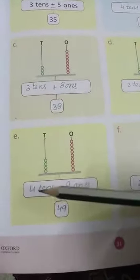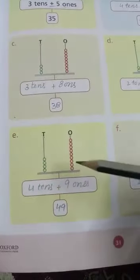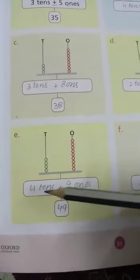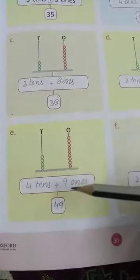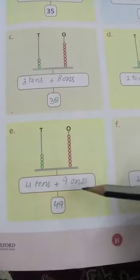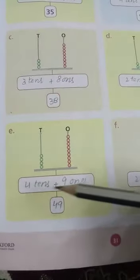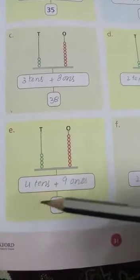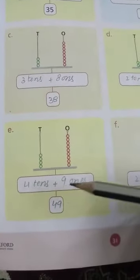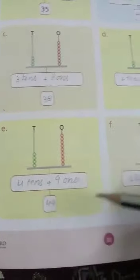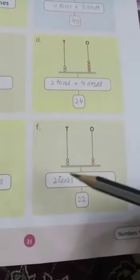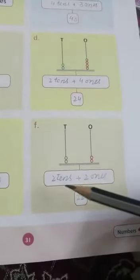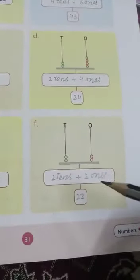Come on to e. How many tenths? Four tenths — write the spelling of tenths. How many ones? Nine ones. The total is forty-nine, 49.